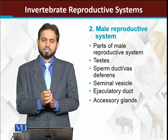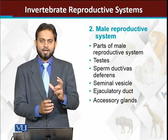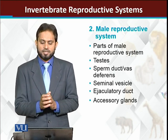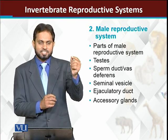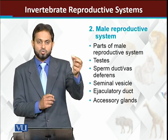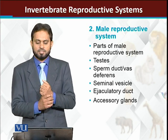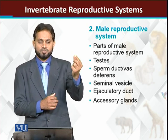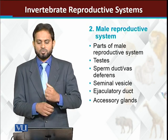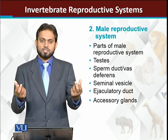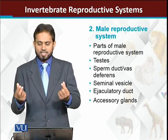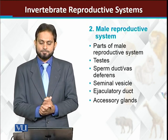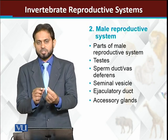The male reproductive system - the prime reproductive organ is the testes, because testes are responsible for gamete formation. The male reproductive system consists of testes, then a duct called the sperm duct or vas deferens. There are two testes, each with a vas deferens, which join together at the seminal vesicle and then the ejaculatory duct through the body.